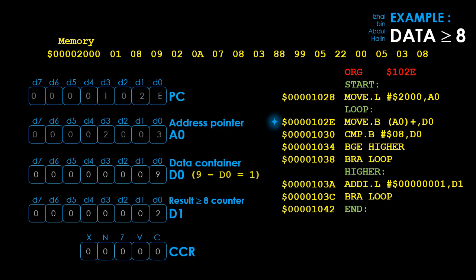The program will continue repeating this process of reading data from memory, comparing it with the value 8, and branching to increment a counter if the data is greater than or equal to 8. We have seen how data with a value equal to or greater than 8 can be detected using a compare instruction followed by a BGE instruction. I hope you are clear on how BGE and BRA instructions work, and how the fetch-execute cycle is carried out using the program counter — including how the program counter changes before executing an instruction and when a BCC instruction is executed.